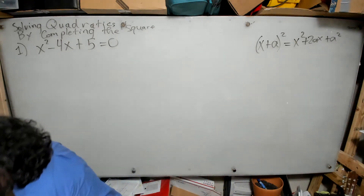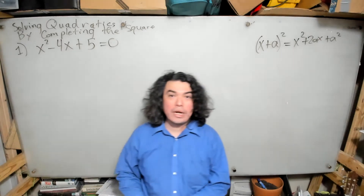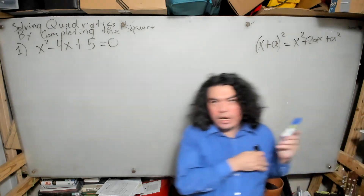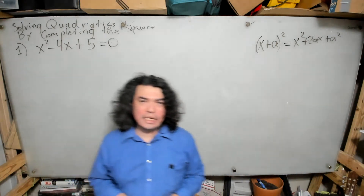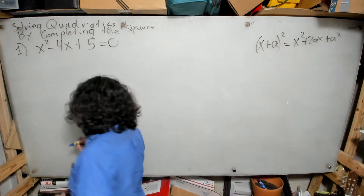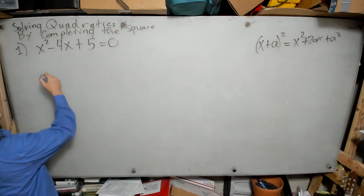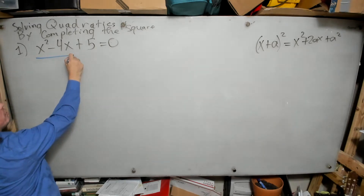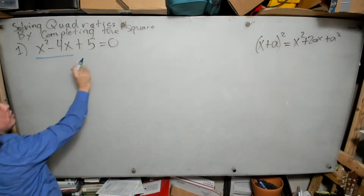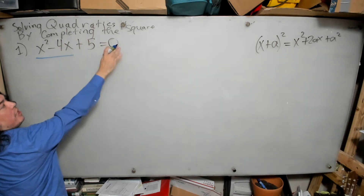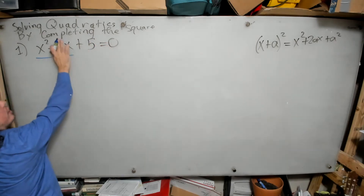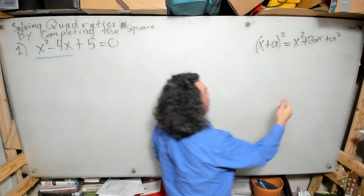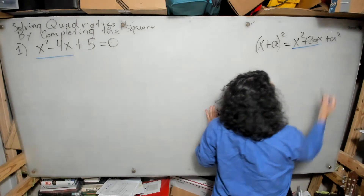Now I know your question: how does that help us with this particular problem? The basic technique is as follows. I want to ask whether I can match a part of this equation — ignoring the plus 5 equals 0 for the moment — I'm just focused on the x squared minus 4x part.